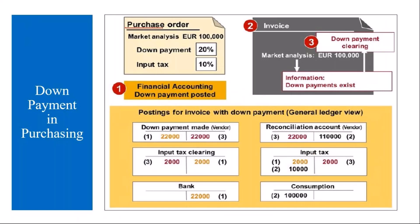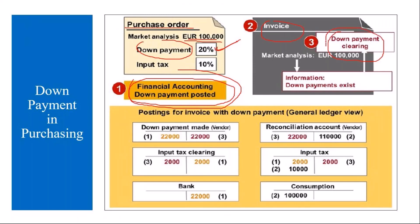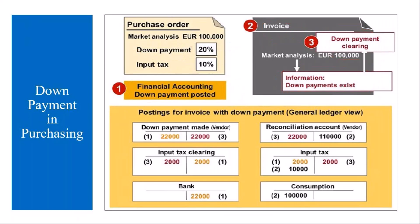When we create the purchase order, it will have a value. For that you enter the down payment — either a percentage or a direct amount. Finance people post the down payment, and when invoicing is done they can clear the down payment. During invoicing, the system will display the information that down payments already exist. Let's go to the system.